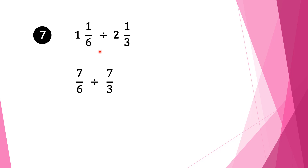Moving on to equation 7. We have 1 and 1 over 6 divided by 2 and 1 third. The first thing we do with mixed fractions is convert into normal fractions. So 6 times 1 is 6, plus 1 is 7, and we bring our denominator 6 as it is. We bring the division sign as it is. For the second fraction: 3 times 2 is 6, plus 1 is 7, and we bring our denominator 3 as it is.